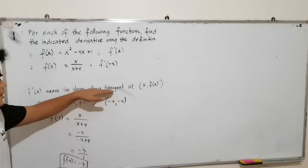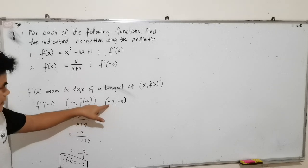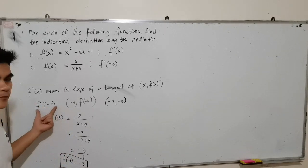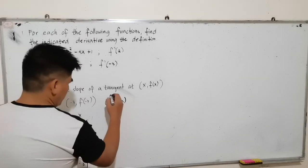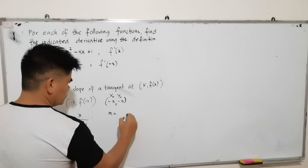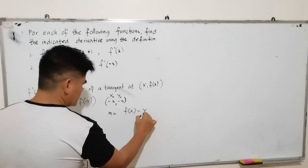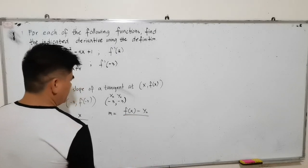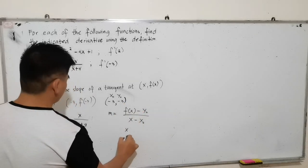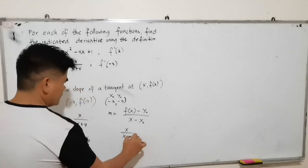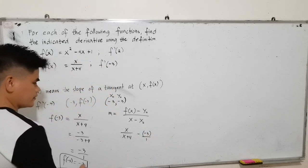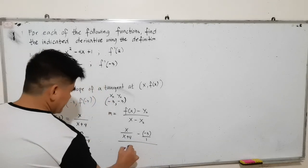We are going to solve for the slope of the tangent line passing through the point negative 3 and negative 3 in the function x over x plus 4. Assigning x sub 0 = negative 3 and y sub 0 = negative 3, the slope equals f(x) minus y sub 0 over x minus x sub 0. So we have x over x plus 4 minus negative 3 over 1, to make both fractions have a common denominator.